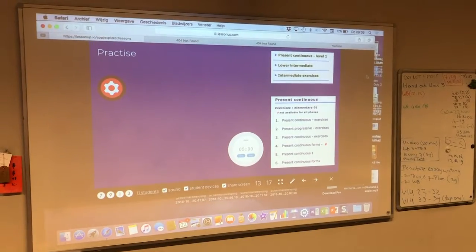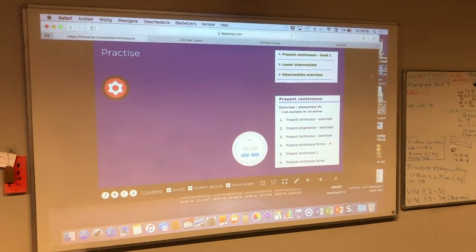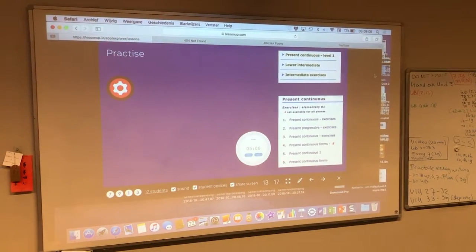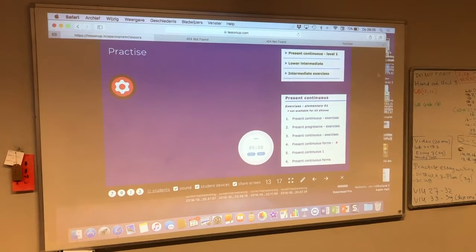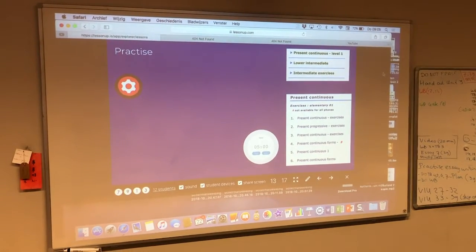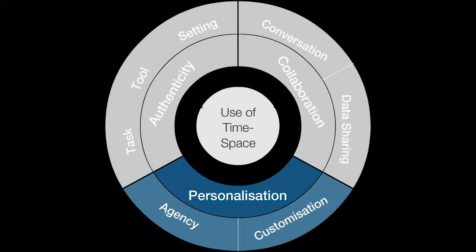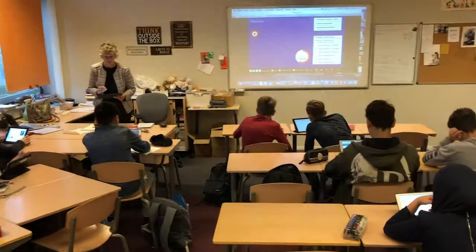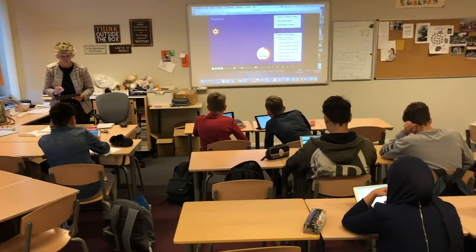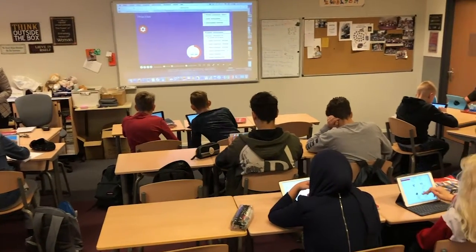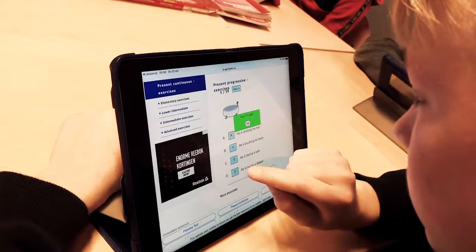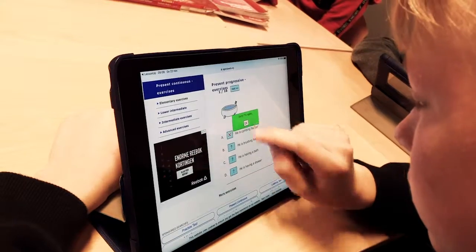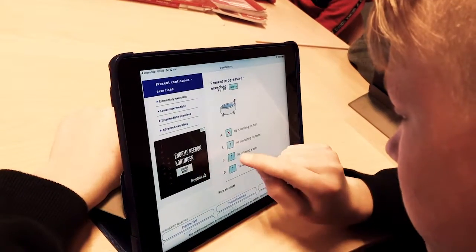After the introduction of the topic, the learners show what they already know about it. Then the teacher motivates the students to take in the explanation. This part of the lesson illustrates how to personalize a traditional task with the support of Lesson Up. It can be used to differentiate in a classroom setting. By choosing their own activities, the learners remain engaged and motivated.